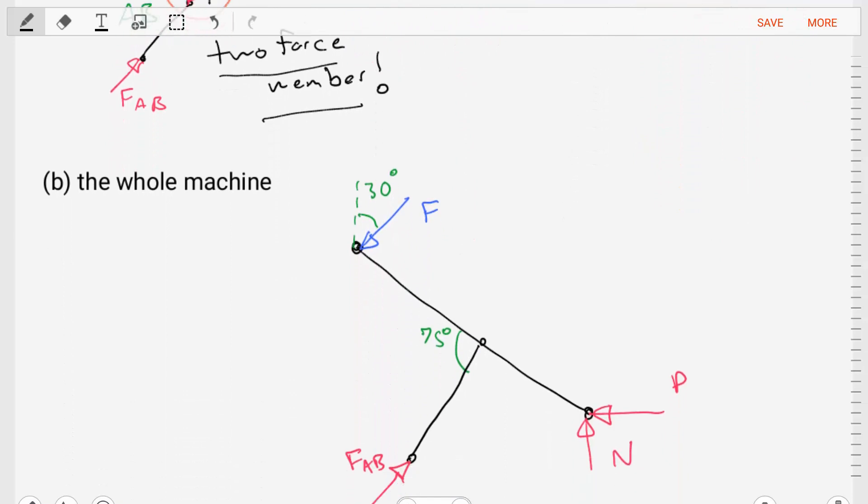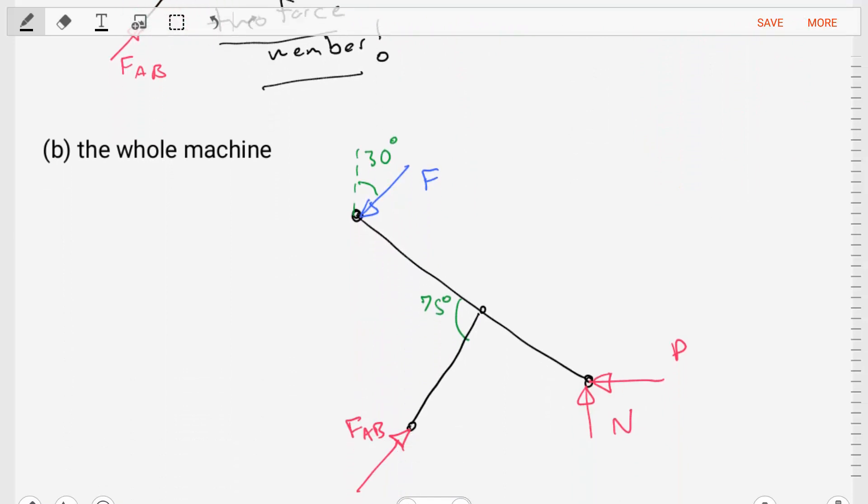We create a free body diagram for the whole machine, which is what we are used to doing, where the components are all connected and still together. And we see that we have our external force F, we have the can crushing force P, we have a normal force, and then we have that force that's transmitted in the short link. It appears that the free body diagrams that we individually crafted do combine into this full free body diagram.